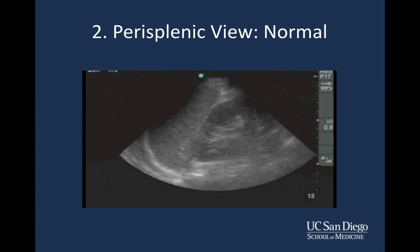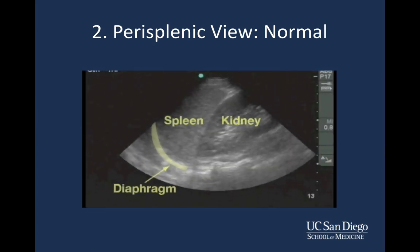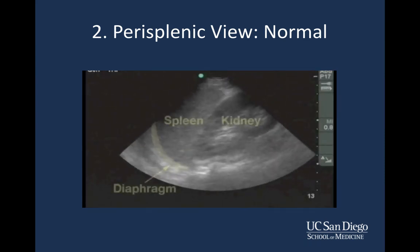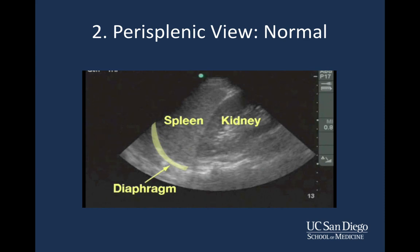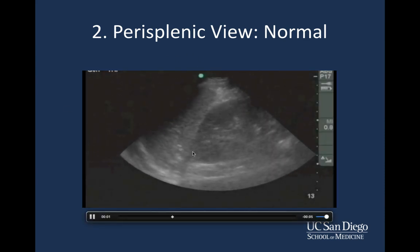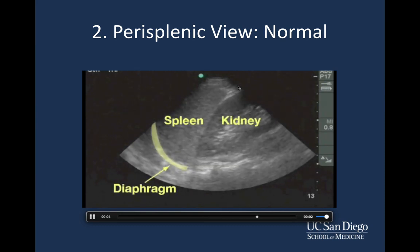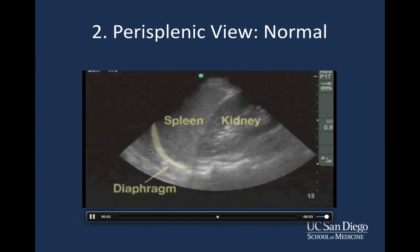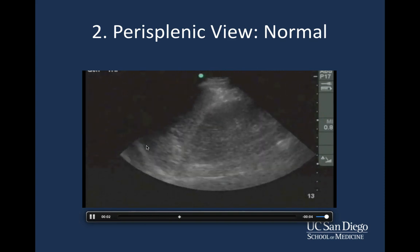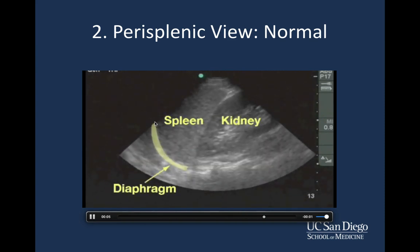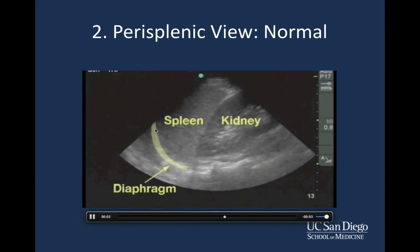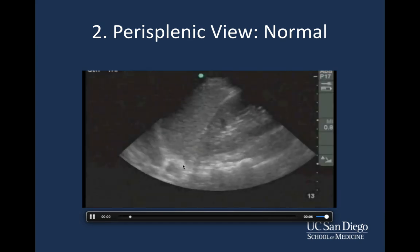Here's an example of a normal perisplenic view. You have the spleen, the diaphragm as that curved hyperechoic structure moving up and down, and you can see the splenorenal space. There's a little bit of hyperechoic material between the two — simply perinephric fat. Above the diaphragm you see a little bit of mirroring artifact, which is normal. It's very important to see the diaphragm because in the left upper quadrant, fluid is often going to be hiding in the subphrenic, subdiaphragmatic space rather than just between the spleen and kidney.